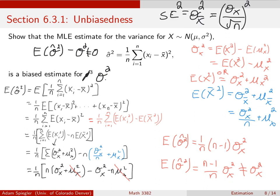One more thing worth noting: this n minus 1 result is not unrelated to why, when we calculate the standard deviation of a sample, we divide by n minus 1 instead of n. If you've ever wondered why the sample standard deviation formula differs from the population standard deviation, it has to do with this calculation.